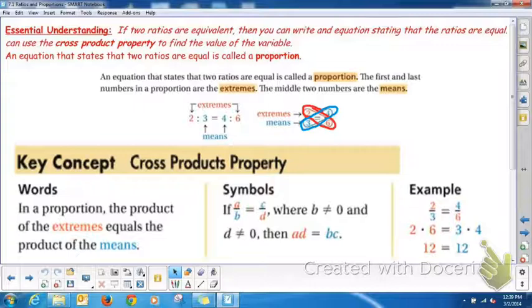So write this down, take note. In a proportion, the product of the extremes equals the product of the means. So when you cross multiply, you should get equivalent products. And the bottoms can never equal zero because those would be undefined then.